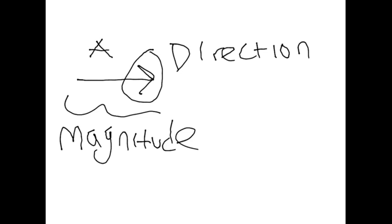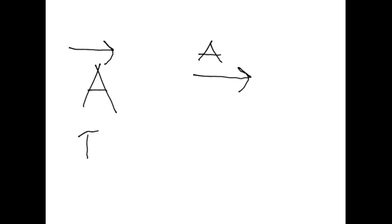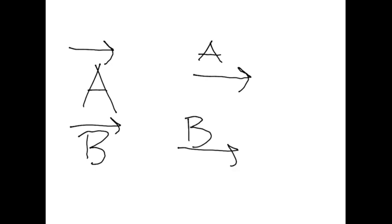When we're denoting vectors mathematically, you can describe them like this: it's A with an arrow on top to represent vector A, or B with an arrow on top to represent vector B. Those are just ways to write it down mathematically.